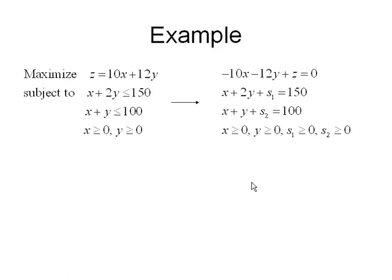So the first thing I need to do is put everything into equalities. So I'm going to take my z equals 10x plus 12y, move the two terms on the right over to the left to get minus 10x minus 12y plus z equals 0.